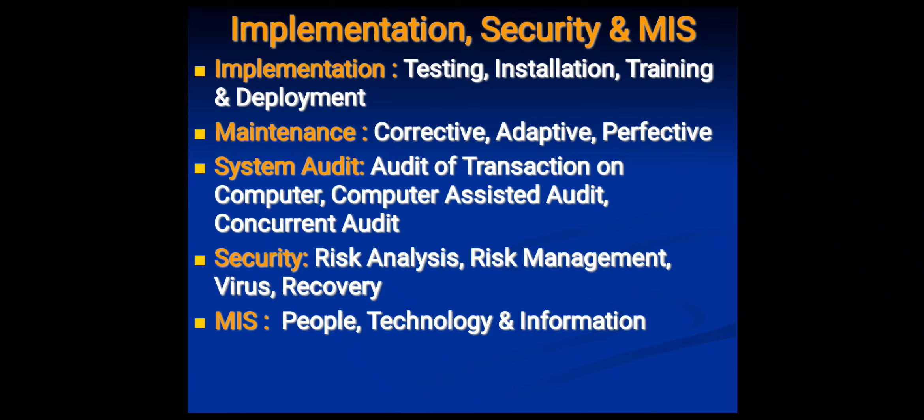MIS — Management Information System — is developed on top of a Transaction Processing System and is responsible for generating important information for DSS — Decision Support Systems. MIS uses people, technology, and data to generate relevant information for decision making. This concludes the block. You can send feedback or queries to the mail ID shown on the slide. Thank you.